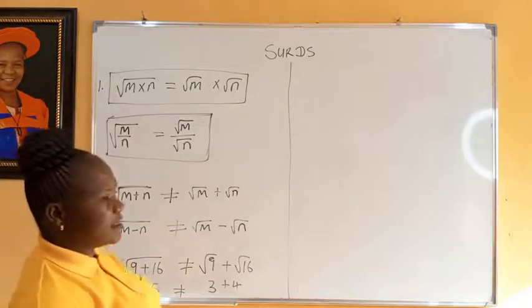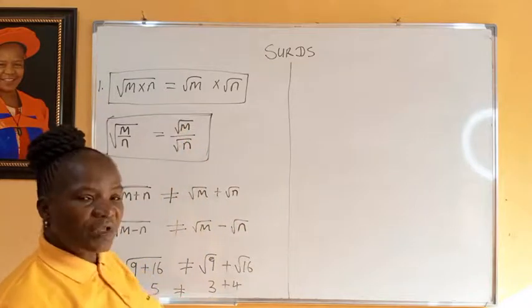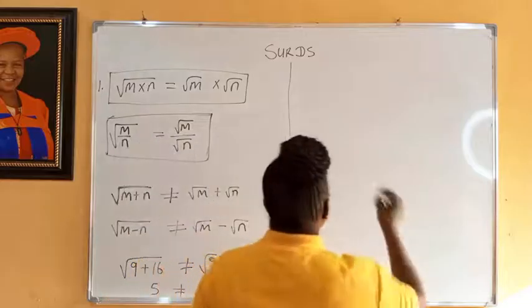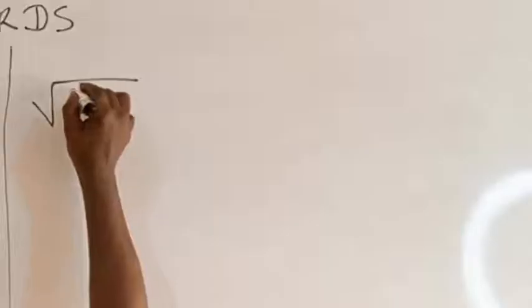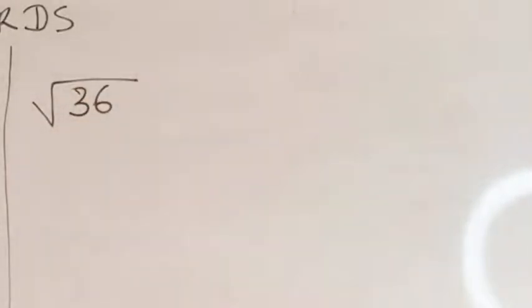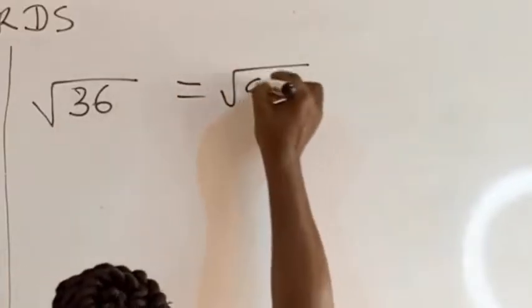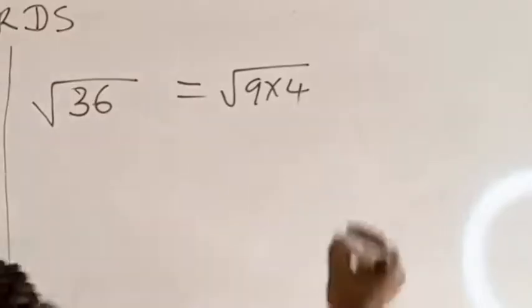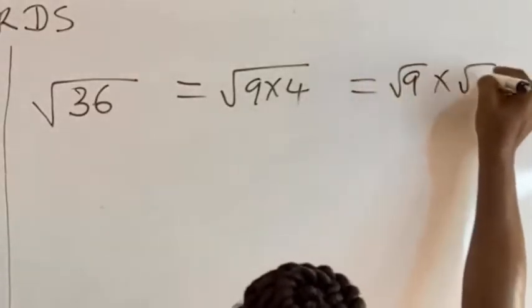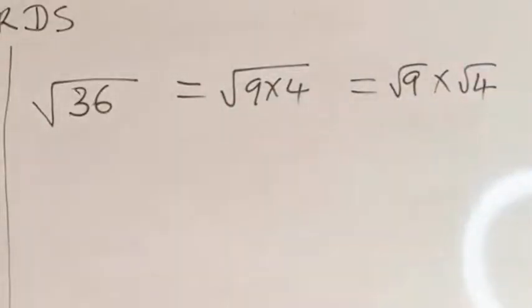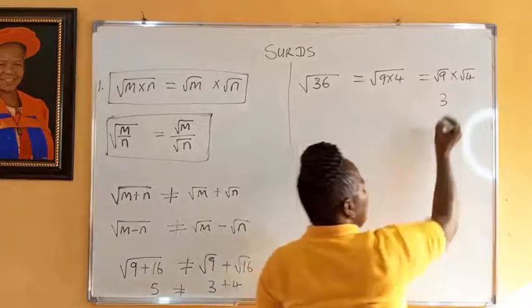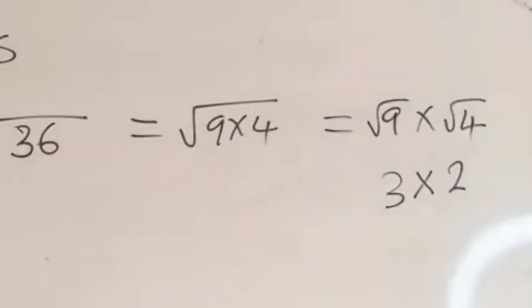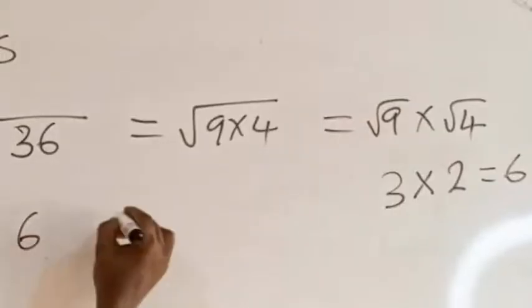Let us also use perfect squares to convince ourselves of the product rule. Observe that 36 equals 9 times 4, so square root of 36 equals square root of 9 times 4, which equals square root of 9 times square root of 4. Square root of 9 is 3 and square root of 4 is 2; 3 times 2 equals 6. And square root of 36 is also 6, so 6 equals 6. This confirms the rule.